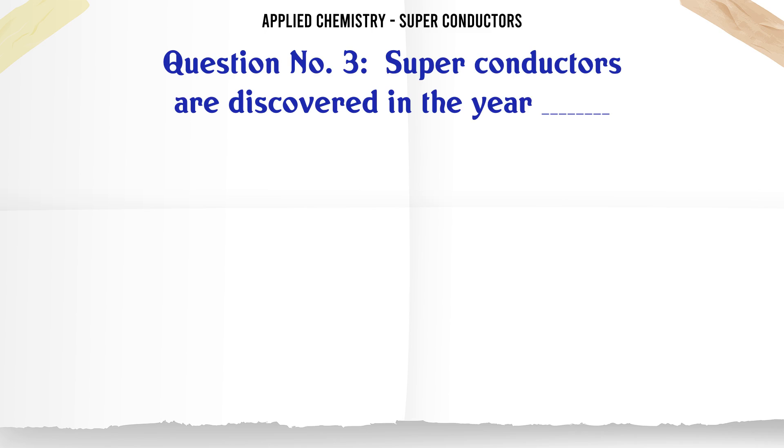Superconductors were discovered in the year: A 1900, B 1991, C 1911, D 1915. The correct answer is 1911.